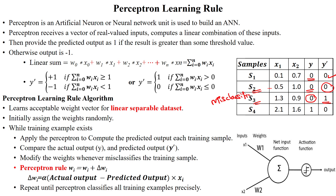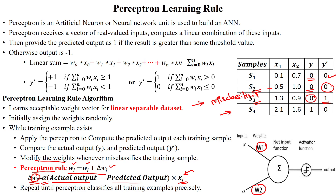Once a sample is misclassified, we apply the perceptron rule to modify the weights. The weights are updated to correctly classify the misclassified sample. The update rule is: wi = wi + Δwi, where Δwi = learning_rate × (actual_output - predicted_output) × xi. We repeat this process until the perceptron correctly classifies all samples, continuously applying the perceptron rule to update the weights.